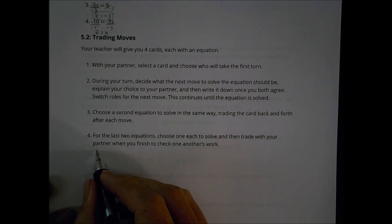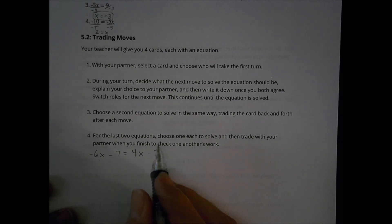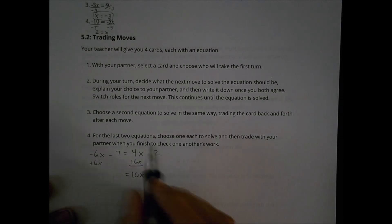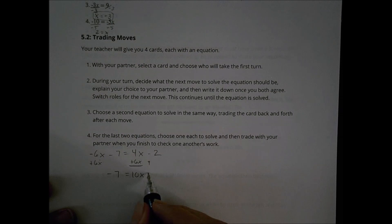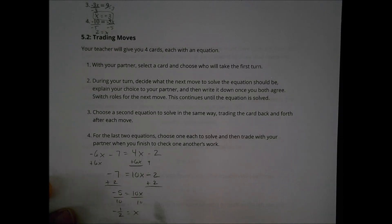As an example, one card had negative 6x minus 7 equals 4x minus 2. I'd first add 6x to both sides to get a positive x value, leaving negative 7 equals 10x minus 2. Then add 2 to both sides: negative 7 plus 2 is negative 5, which equals 10x. Dividing both sides by 10, x equals negative one-half. I can leave it as a fraction or write it as negative 0.5.